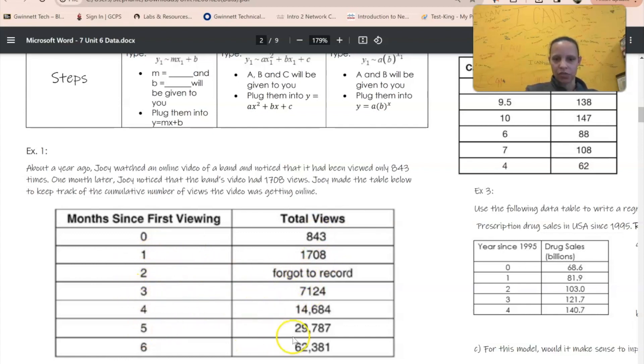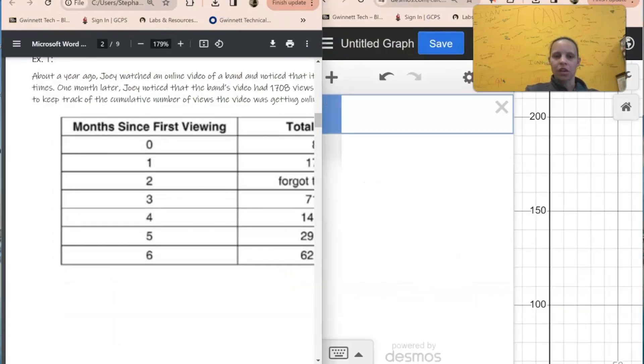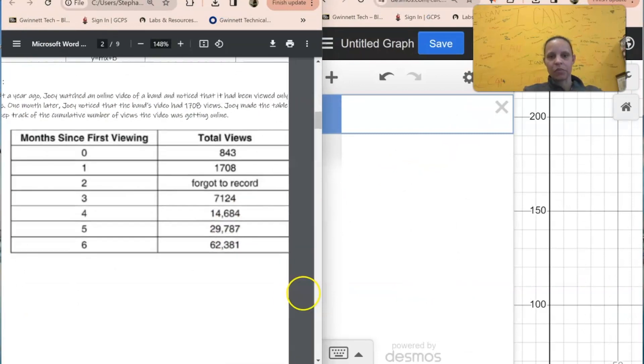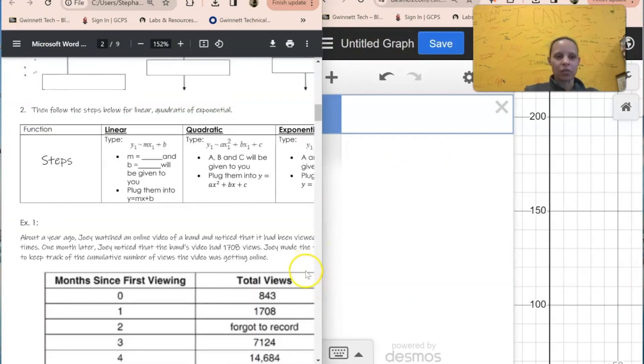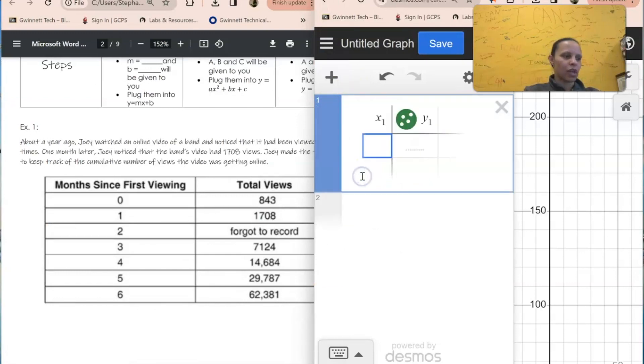Okay, so again the steps are you input the table, look at what it is, then follow these steps based on what it is to get the equation. So let's go ahead and input the table first. In Desmos, how do I input a table? I click the plus sign, then I click table, and we're just going to put the table in. So it says zero...